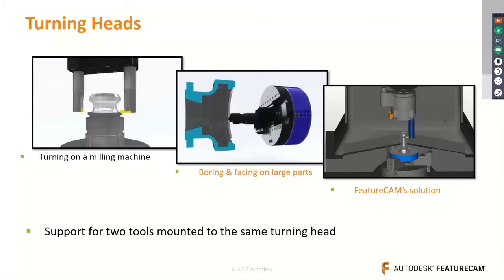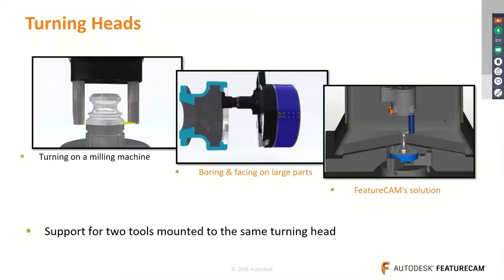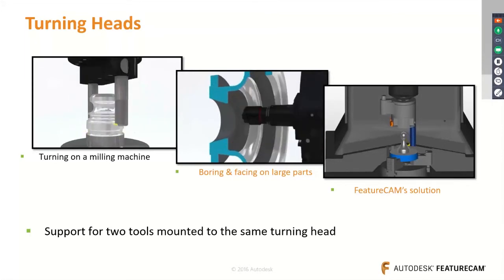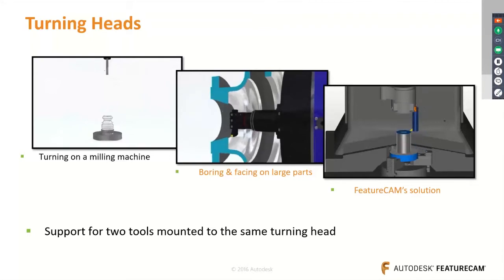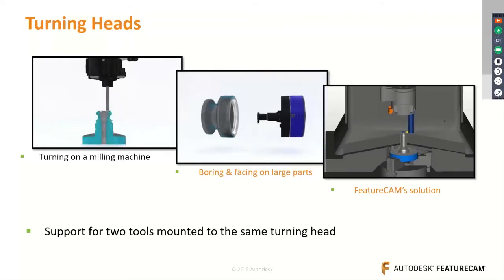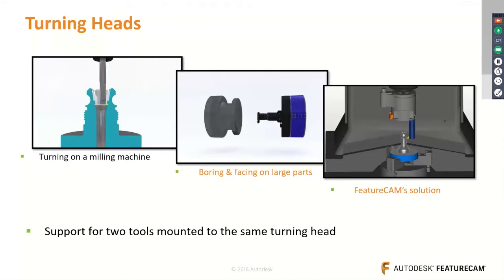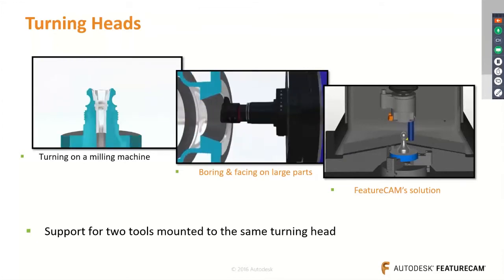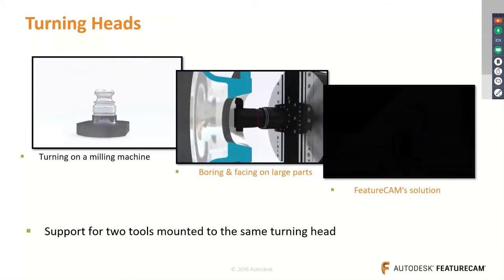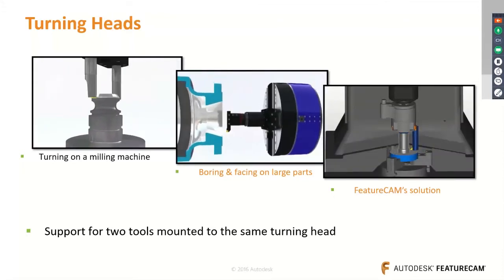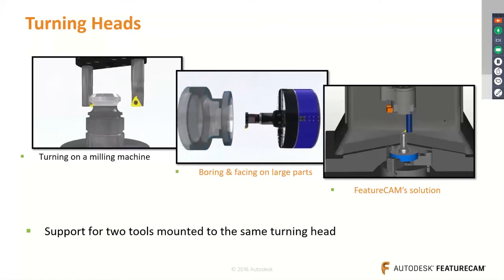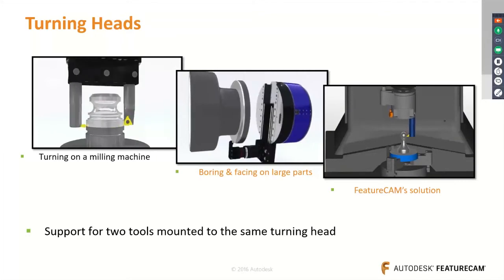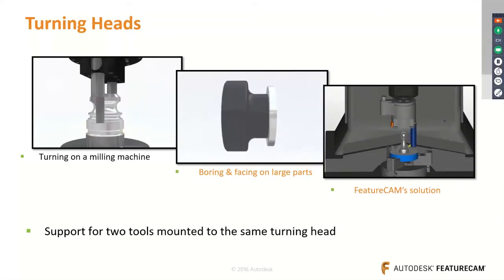FeatureCAM supports turning heads — a lathe module for milling machines — giving users most CNC lathe capability at a fraction of the price. The device incorporates a quality, compact lathe headstock and tool holder, letting users easily make high-precision lathe parts on their milling machine.